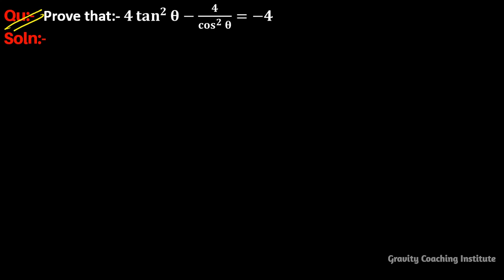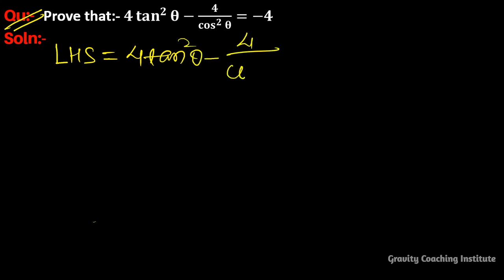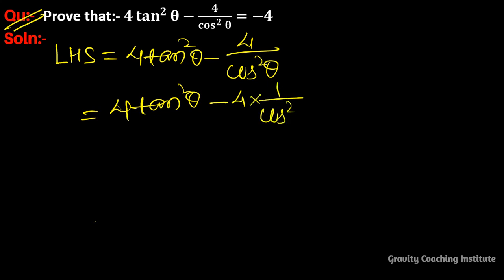Prove that 4tan²θ - 4/cos²θ = -4. The LHS is equal to 4tan²θ - 4 × (1/cos²θ). We know that 1/cosθ is equal to secθ.